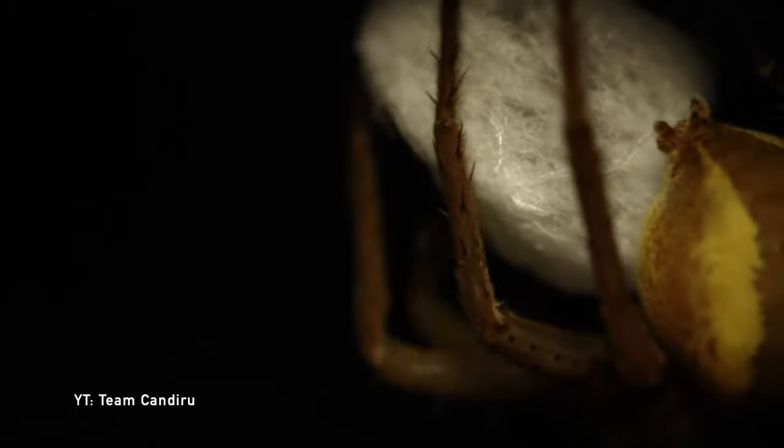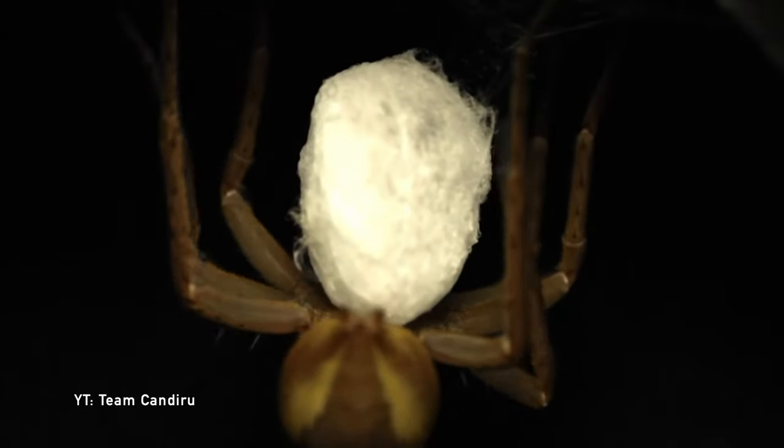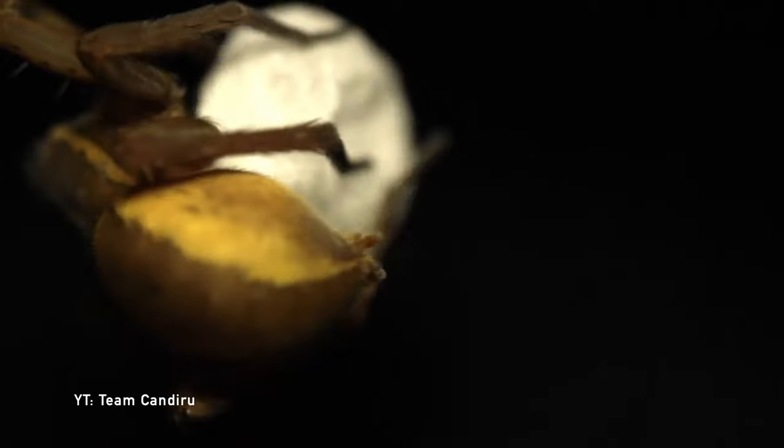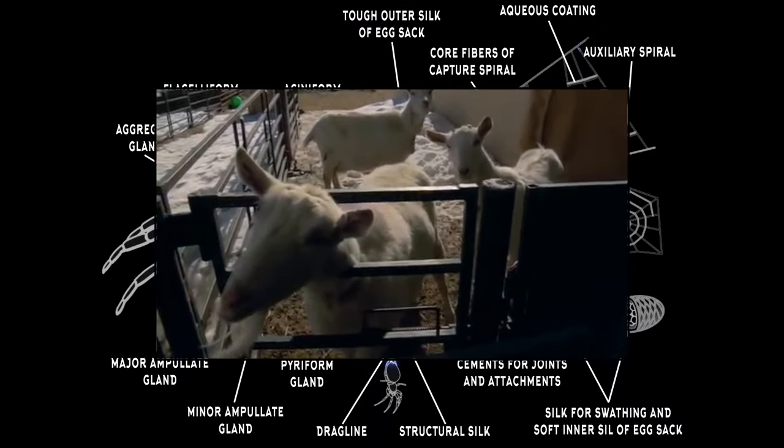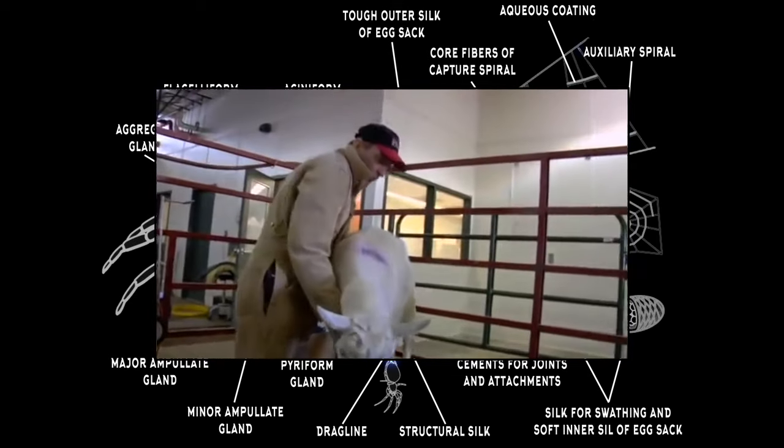and spinnerets that serve to transform the liquid aqueous protein solution into solid fibers, and the chemical and genomic efforts to effectively manufacture spider dragline silk or similar fibers for human use.